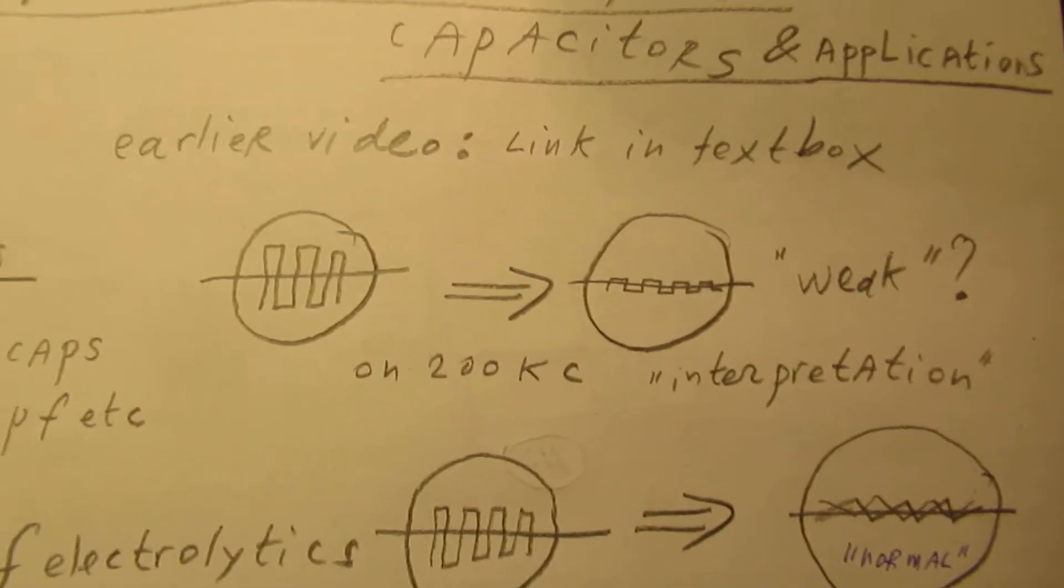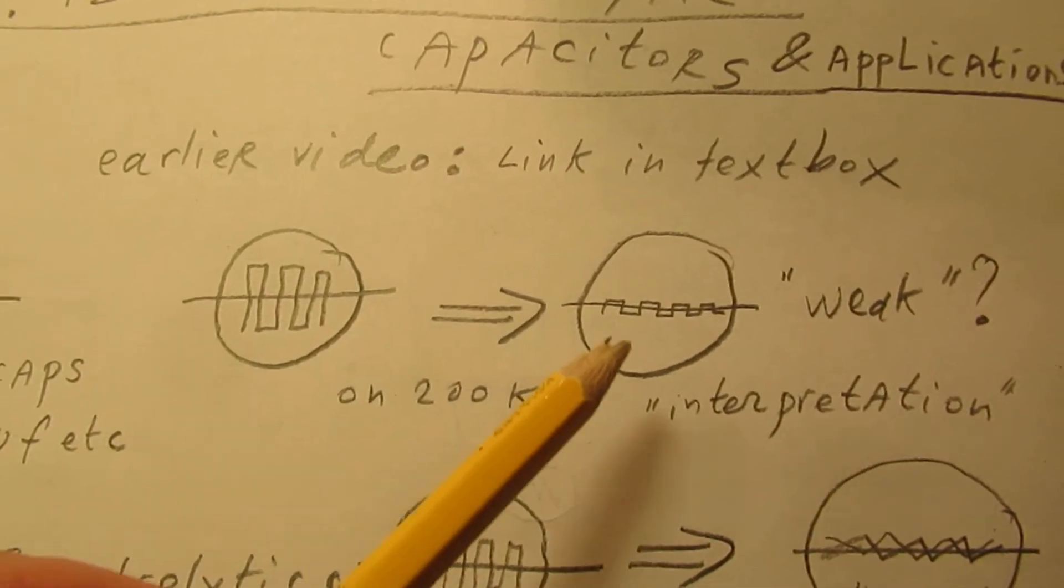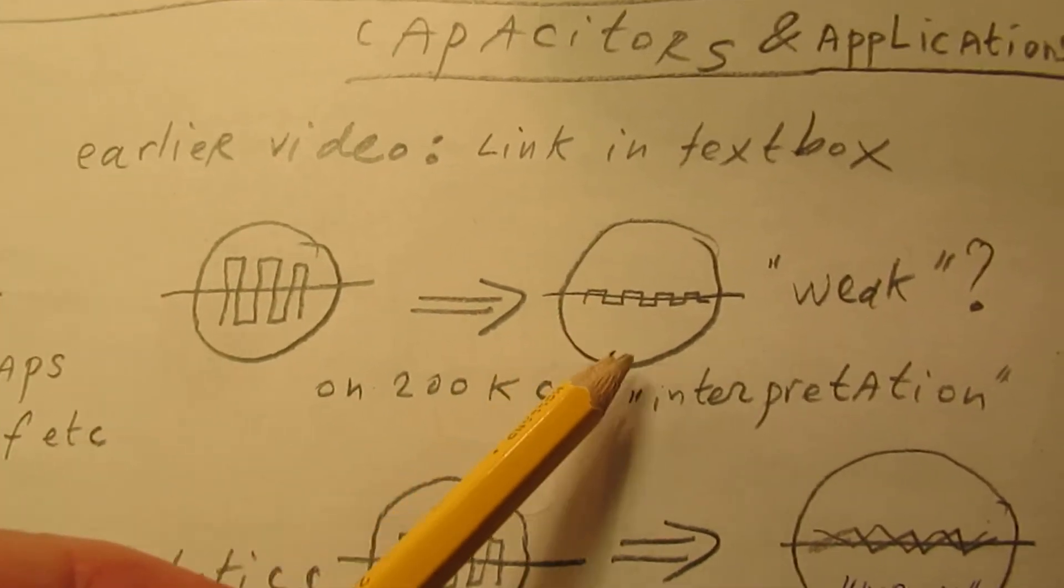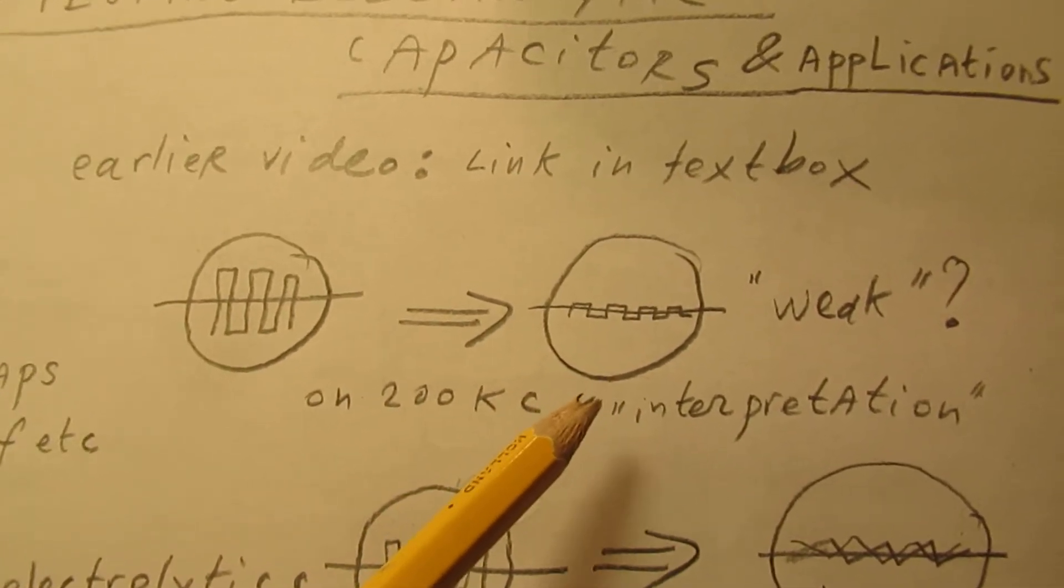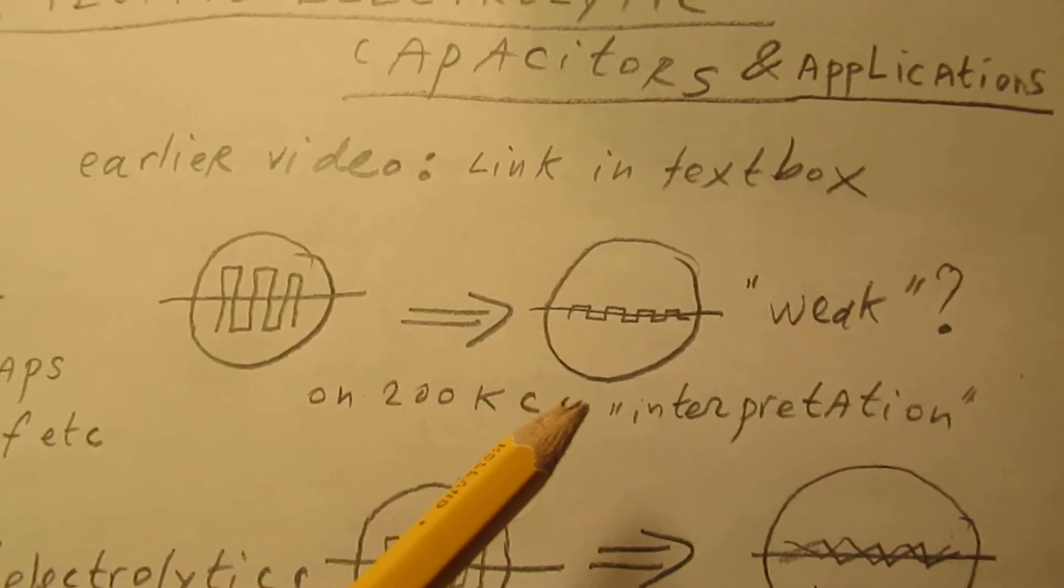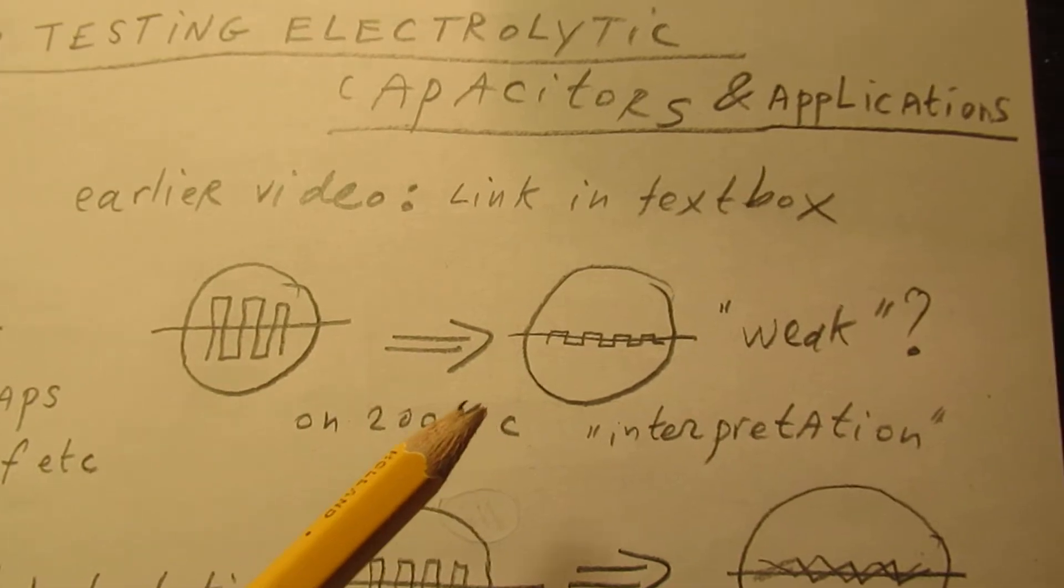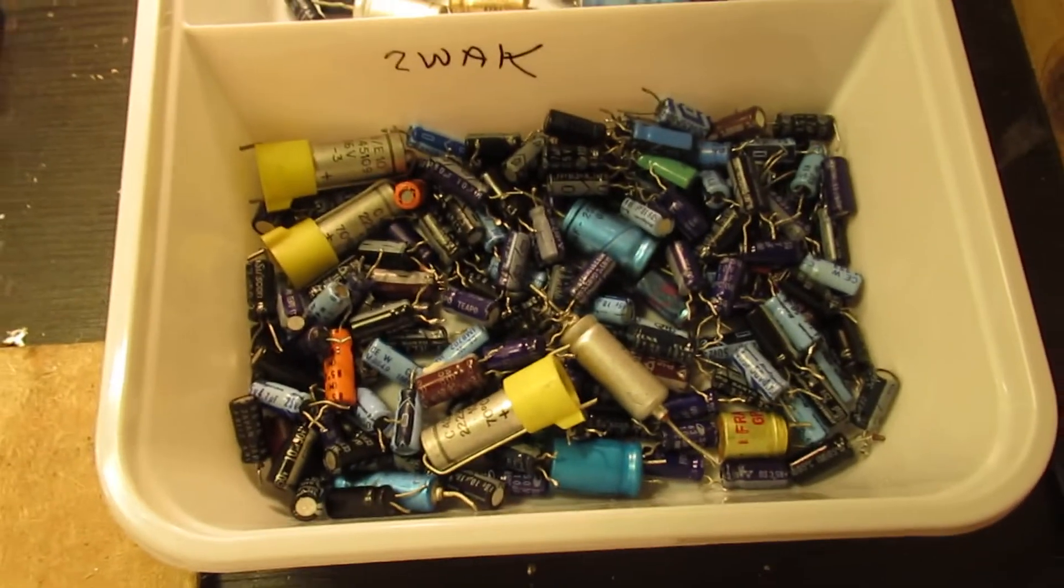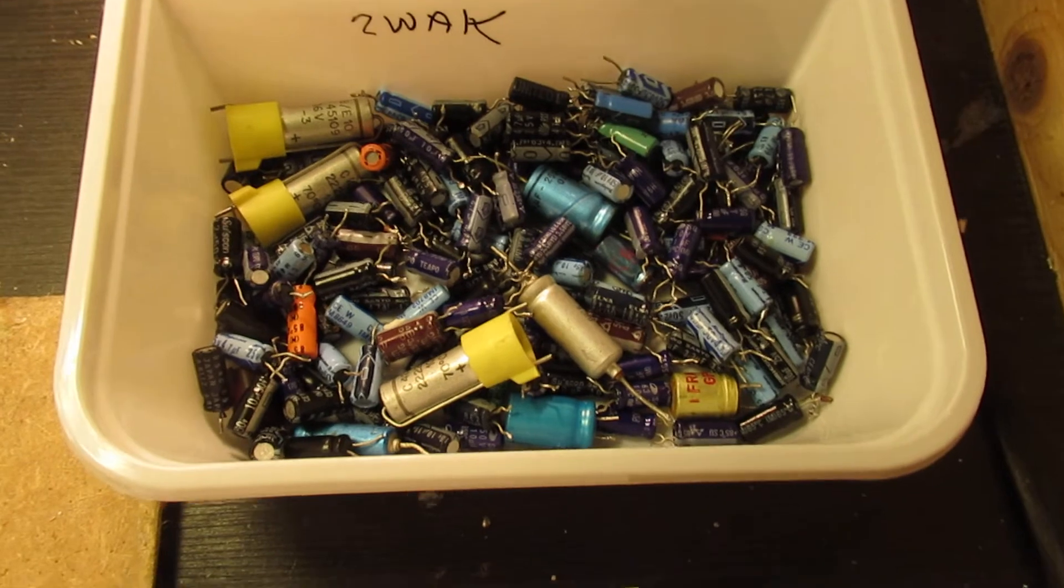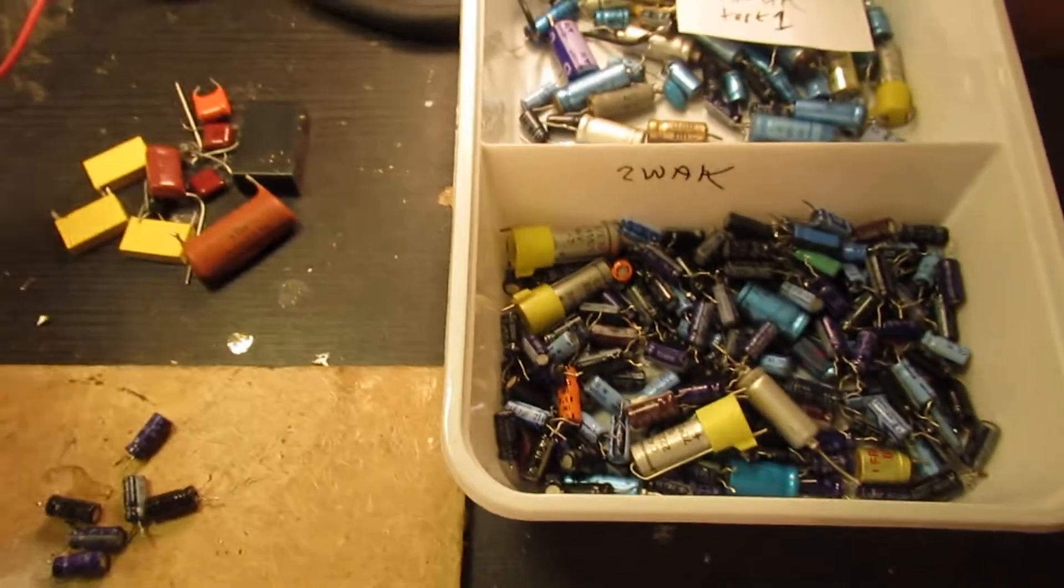I found that the square wave dropped to a very low value and I indicated that as weak. But the problem is, are they really weak? Of course I also found many real defective capacitors, they are here.